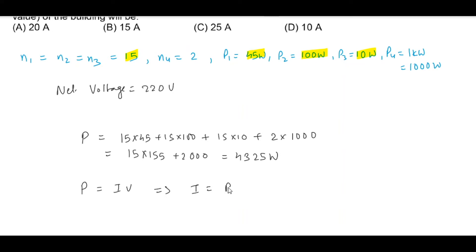So I which is P by V, this much current is required. So we can write 4325 divided by 220, this much current is required.